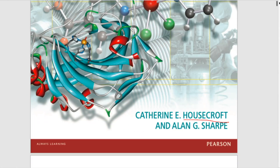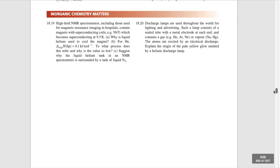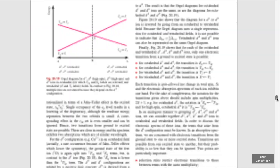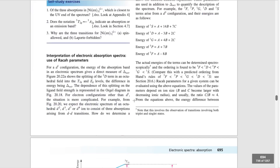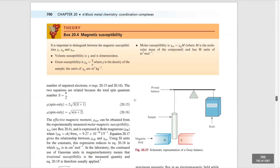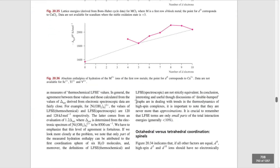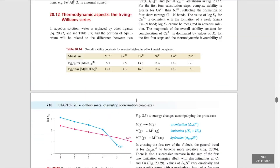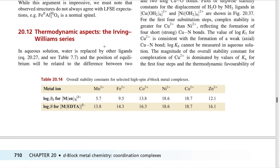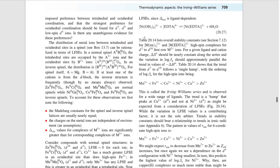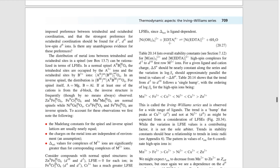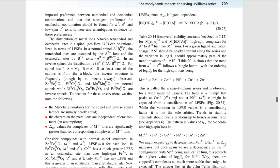In the fourth edition of Inorganic Chemistry by Housecroft, go to chapter 20 — which covers d-block metal chemistry and coordination complexes. On page 708, there is figure 20.14 on the thermodynamic aspects of the Irving-Williams series. It explains that in aqueous solution, water is replaced by other ligands — which is exactly what the question describes.